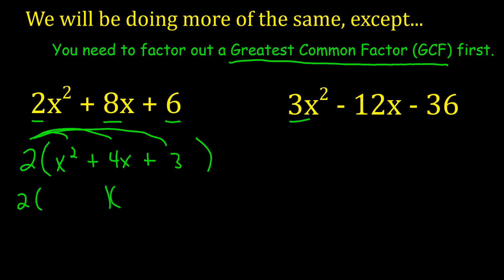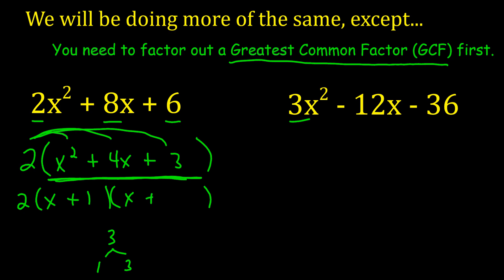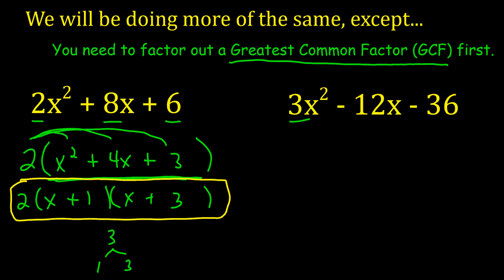Now we're going to take that new trinomial after we've factored out the 2 and factor it. x times x gives me x squared. The factors of 3 are just 1 and 3, and does that add up to 4 in the middle? It sure does. So it's going to be x plus 1, x plus 3. Your answer is 2 times x plus 1 times x plus 3.